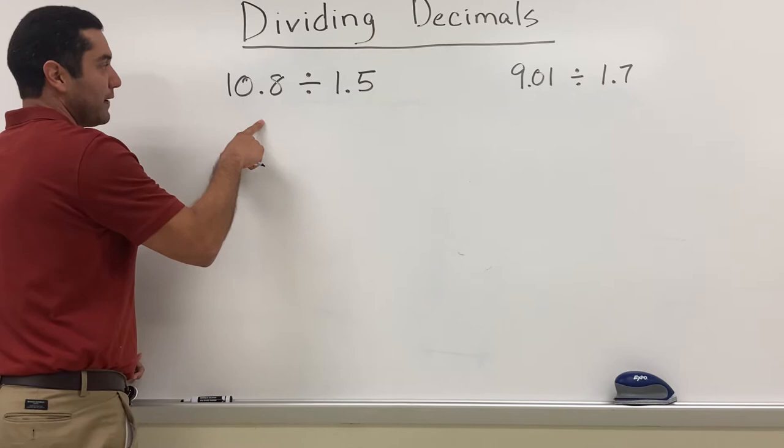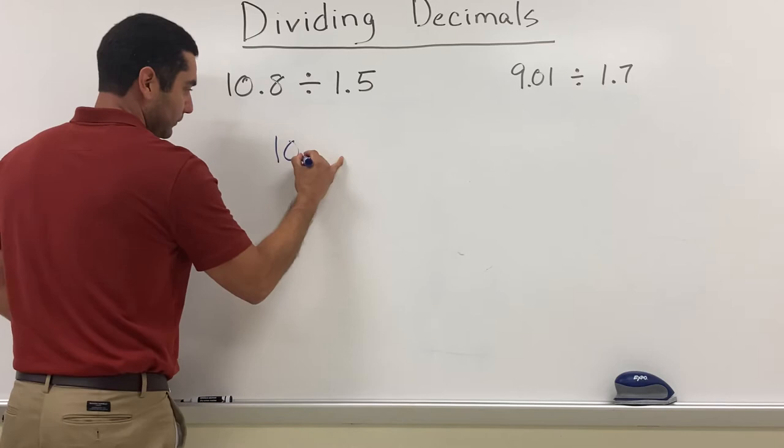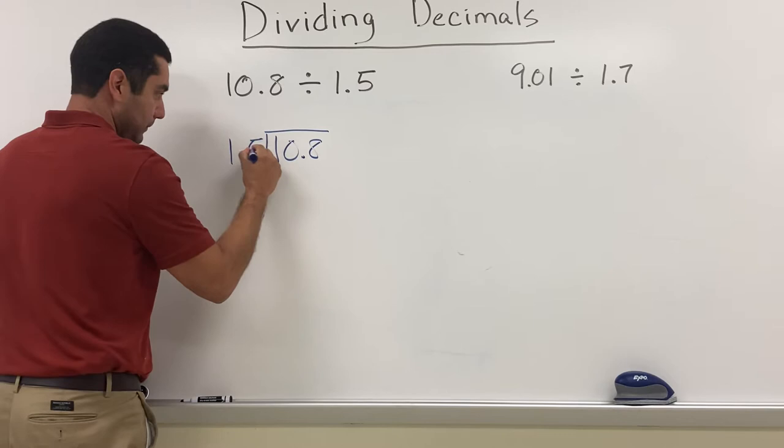Dividing decimals. When we're dividing, we always remember the number that comes first - that's the number that goes on the inside. So 10.8 is being divided by 1.5.